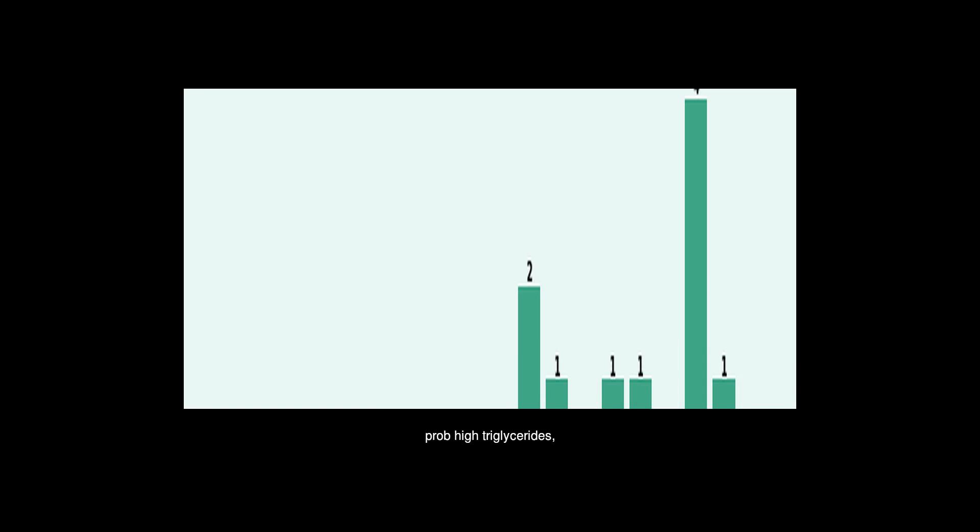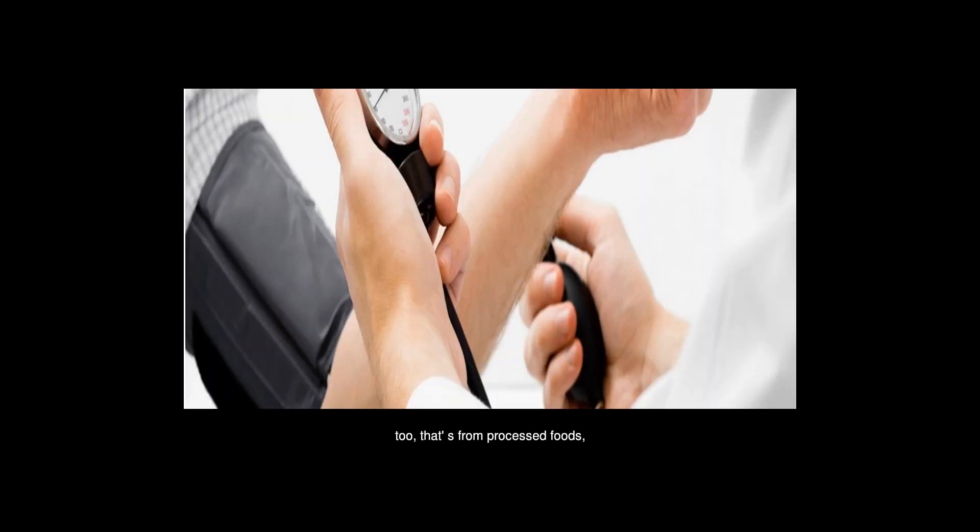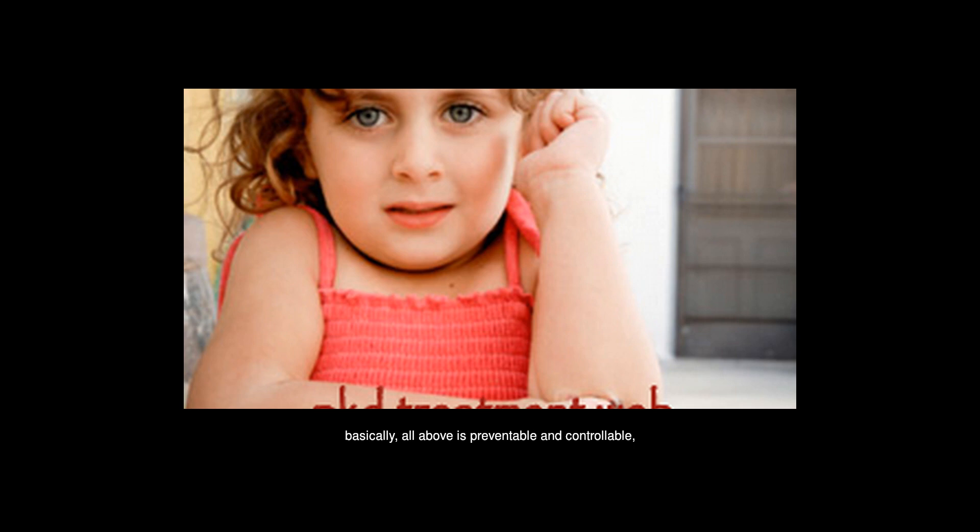They work together and the high cholesterol is your enemy right now. Probably high triglycerides too. That's from processed foods. If you let this go untreated, you could also develop diabetes. Basically, all above is preventable and controllable. Some have a genetic predisposition.